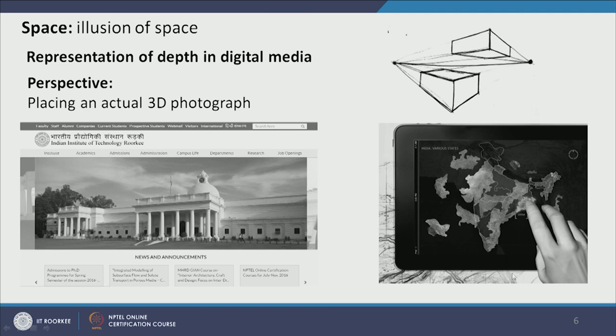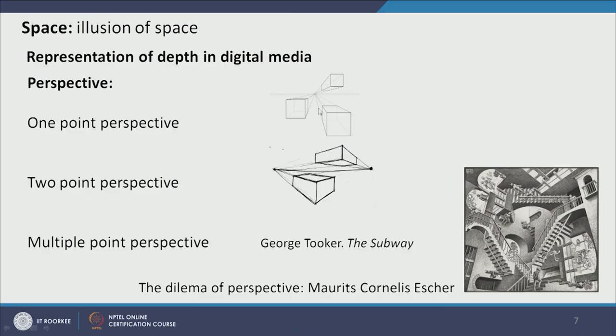Another way of representing a sense of depth is perspective, which looks more realistic. In digital media we can use a real photograph that follows a perspective drawing. Here we can see the website of IIT Roorkee with an actual photograph of the main building, which creates a sense of depth because it follows perspective. A hand appearing on the UI design also adds to the three-dimensional quality of a 2D space. Perspective can be of different types: one-point perspective, where every line vanishes to a single point; two-point perspective, where all lines vanish to two different points; and there can also be multiple-point perspective.